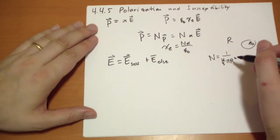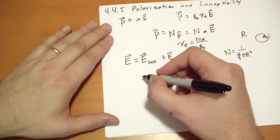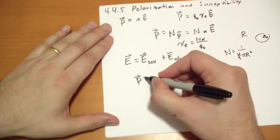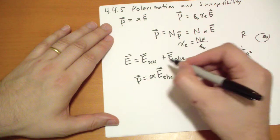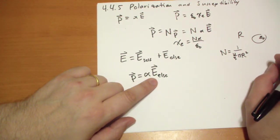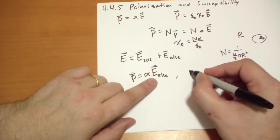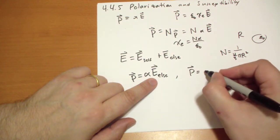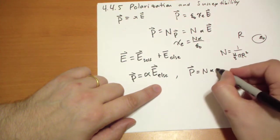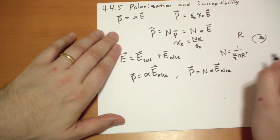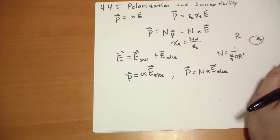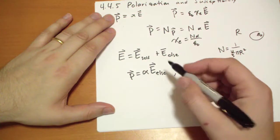The dipole moment of the atom is actually only due to the electric field of everything outside. And so the polarization at this point is actually this formula, not the total electric field.